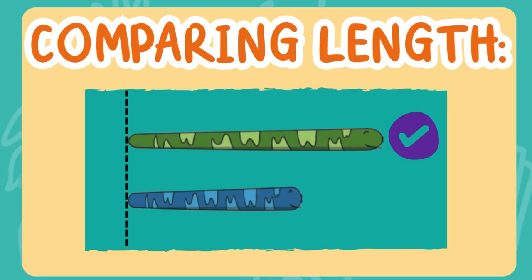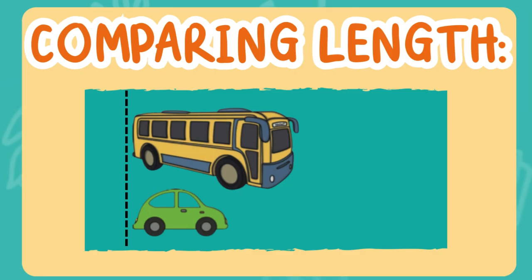Nice work! Now let's try with shorter. Which of these objects is shorter — the bus or the car? Put on those thinking caps! That's right! The car is shorter than the bus. Say that with me: the car is shorter than the bus.